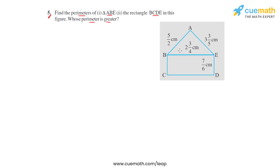Converting 2¾ into an improper fraction: 4 times 2 is 8, plus 3 gives 11, so that becomes 11/4 centimeters. Similarly, converting 3⅗: 5 times 3 is 15, plus 3 gives 18, so that becomes 18/5 centimeters.